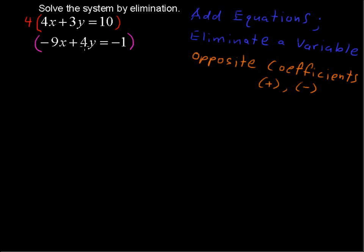We're going to multiply this by 3 to get to 12. 3 times 4 is 12, but we want the opposite coefficients. So I'm going to multiply everything by negative 3, so negative 3 times positive 4 is negative 12.